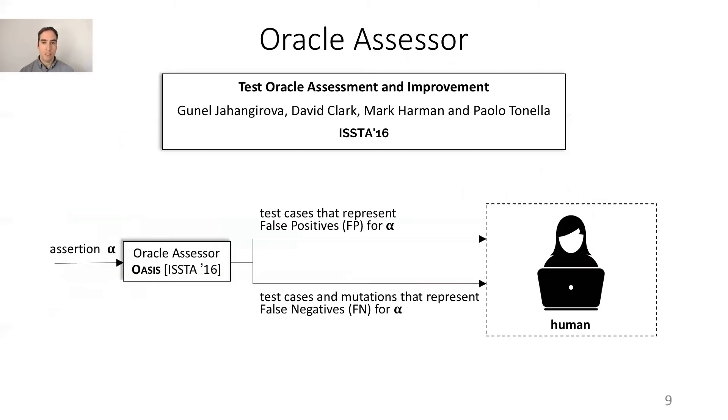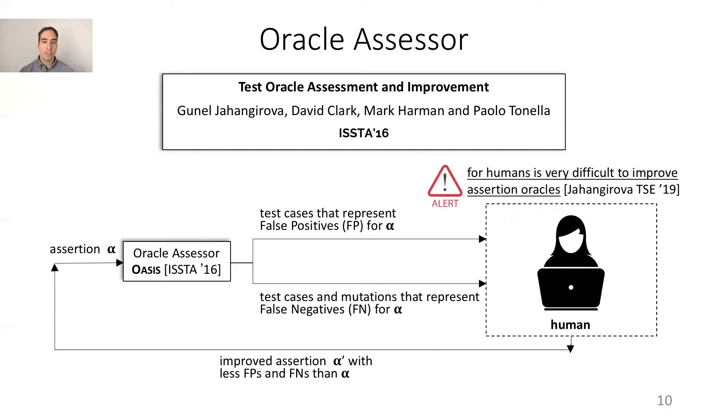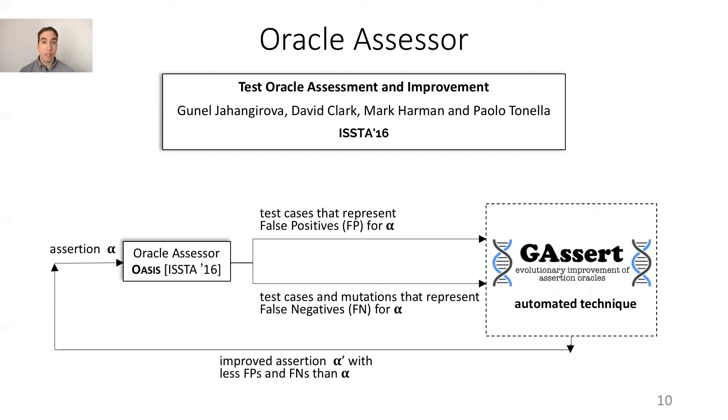In 2016, Jelangirova and colleagues proposed a technique called Oasis that, given an assertion, automatically searches for test cases representing false positives and test cases with mutations that represent the false negatives of the assertion. This evidence is then given to a human to manually improve the assertion. However, in their recent empirical study published at TSE in 2019, they found that for humans it is very difficult to improve assertion oracles, and this motivated us to propose in this paper the first technique to automatically improve assertion oracles given evidence of false positives and false negatives. We call our technique J-Assert.